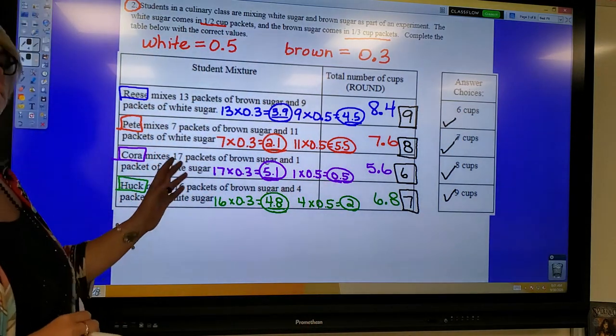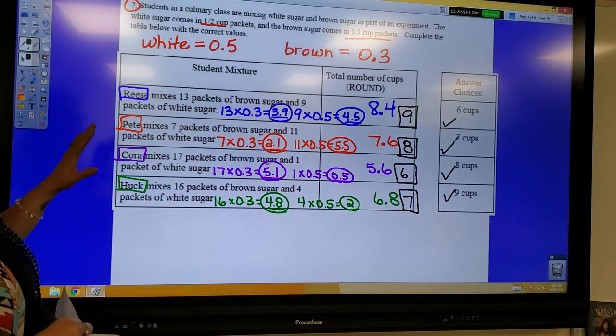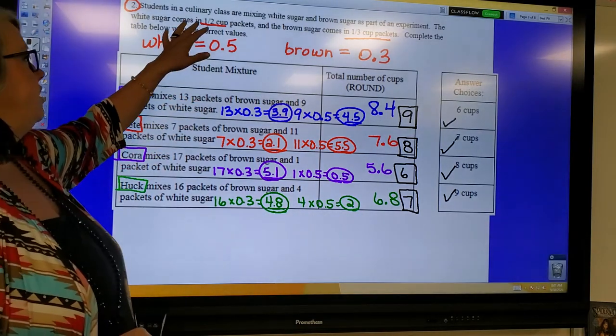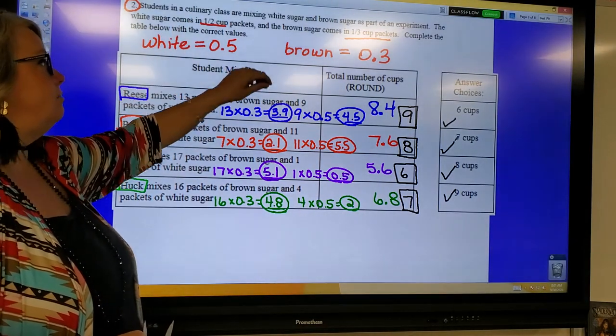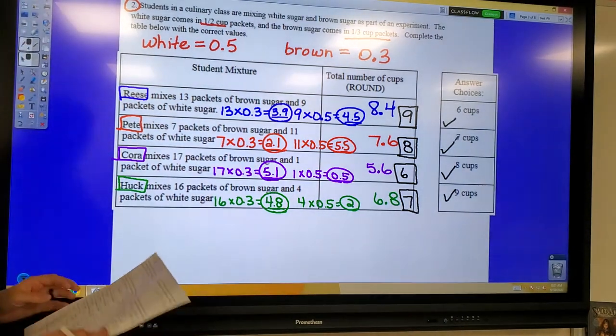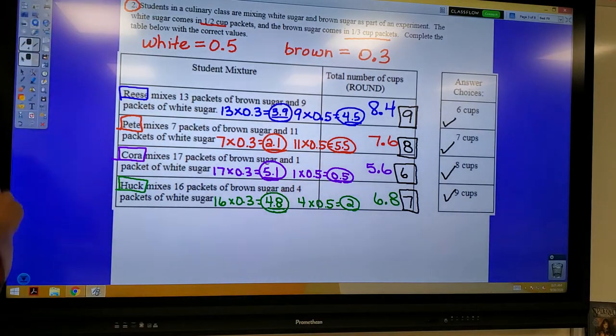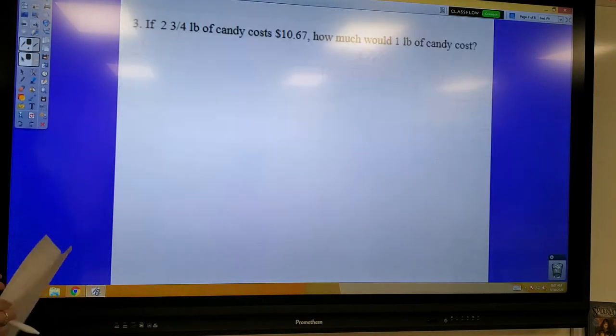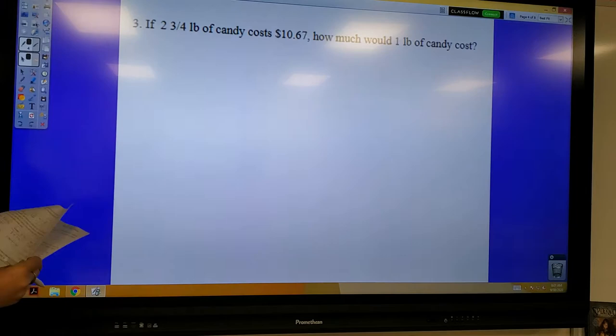So that would be, I think, the easiest way to do this problem. You could have left these in fraction form. You could have done one-half times the whole number, one-third times the whole number. But that probably would have taken you a lot longer to do. Okay, let's move on to question number 3, which is a much faster problem. We did examples like question number 3 on the fraction word problem paper.